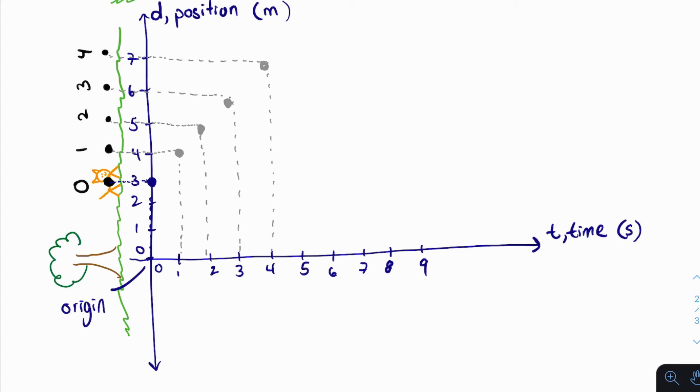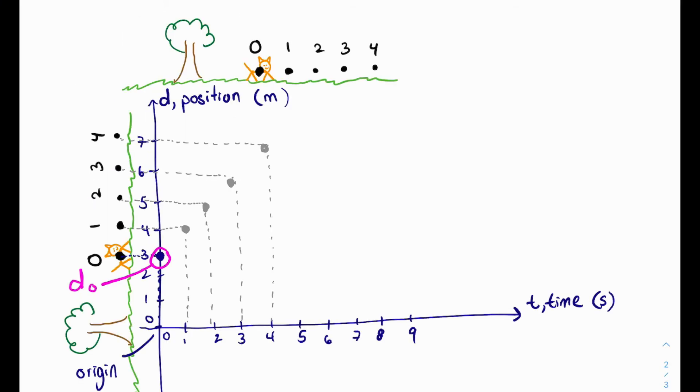So this is our very first position time graph. And here we can get some information from this, so let's try to label it. So at time 0, that's where the cheetah begins, so its initial position. We could label that as D0. Let's make a legend out here on the other side. D0 is our initial position.